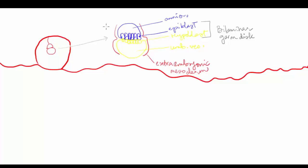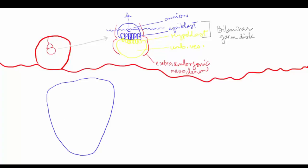It all starts with the primitive streak. First we'd have to slice the embryo through a section, and if we were to look down at the dorsal surface of the epiblast disc, by the beginning of gastrulation a bunch of cells at about this point grow in the median plane — by grow I mean they proliferate a lot — and they develop a sort of knot at the end. This structure is known as the primitive streak, and this knot of cells at the end is known as the primitive node.